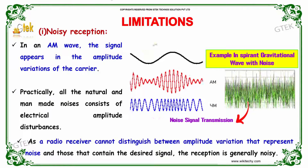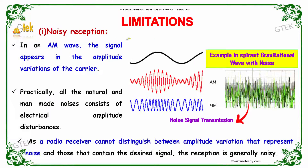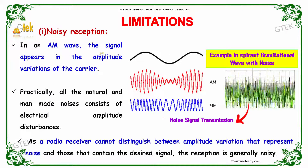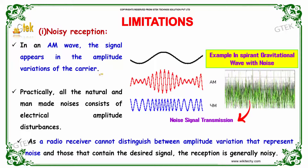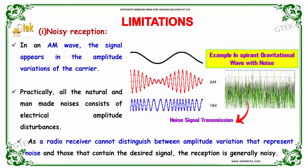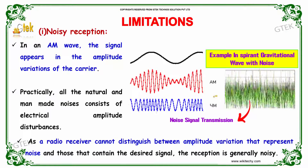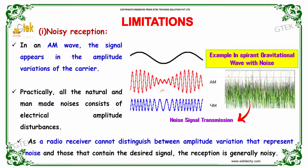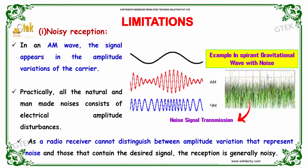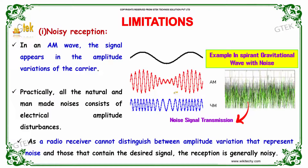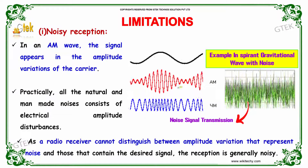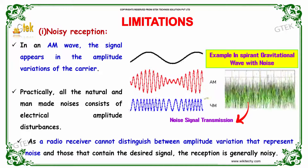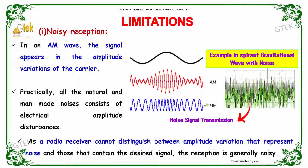So, here is the limitation we are going to see. The first one is noisy reception. In an amplitude modulated wave, the signal appears in the amplitude variation of the carrier. Practically all the natural and man-made noises consist of electrical amplitude disturbances. As a radio receiver cannot distinguish between the amplitude variation that represents noise and those that contain the desired signal, the reception is generally noisy.